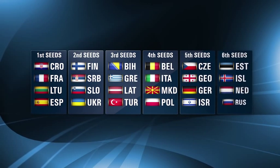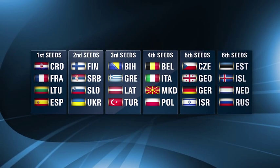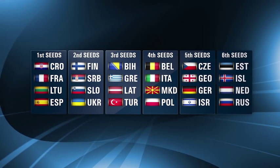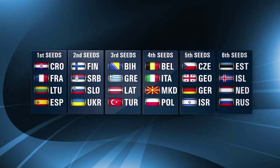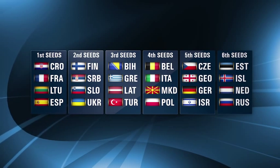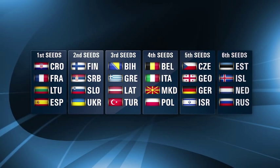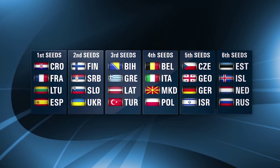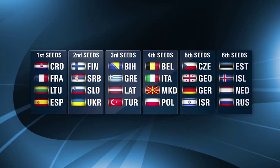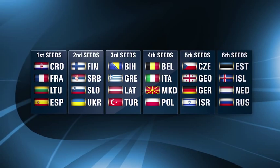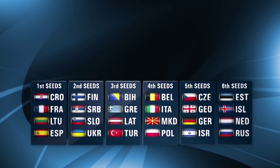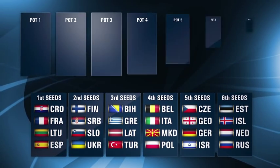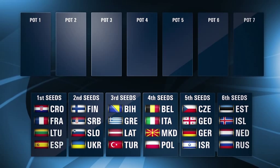24 teams will participate in EuroBasket 2015 and have been ranked in accordance with the FIBA Europe regulations, which is based on their record in the most recent FIBA Europe competition in which they've participated. For the draw, there will be seven pots in total.